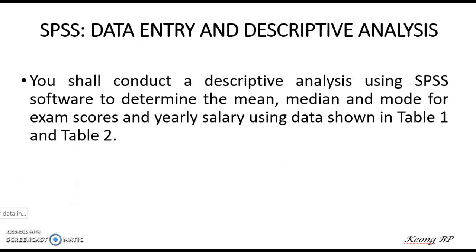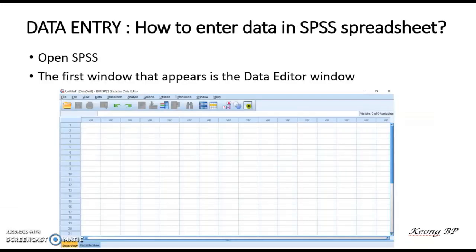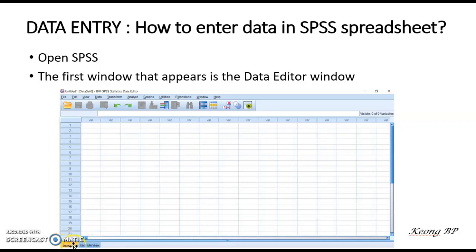After you have opened the SPSS software, the first window that appears will look something like this. This is called the Data Editor window. On the bottom left side there are two tabs: the first tab is the Data View and the second is the Variable View. Now put your cursor on the Variable View and click on it.